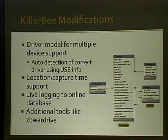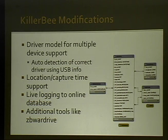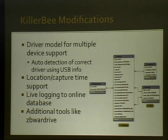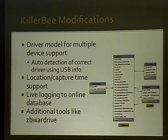Now let's look at code modifications. First is a driver model to support multiple devices — since we're using a variety of hardware, we want to fluidly support them. We're also doing location and time stamping as close to the actual frame capture as possible, and live logging to a database schema — you can see part of the schema on the right — to correlate data from multiple capture devices and generate an overall picture of the network. We're also building ZB Wardrive, which detects which channels have networks operating and dynamically assigns capture devices to those channels with traffic.